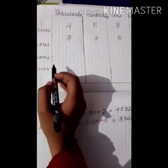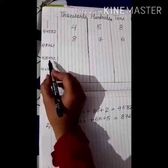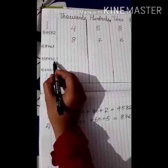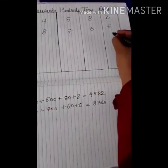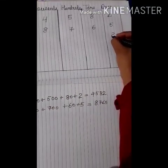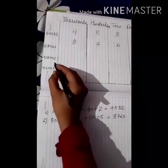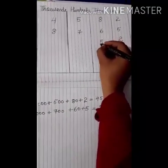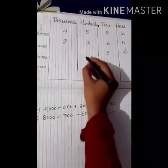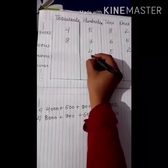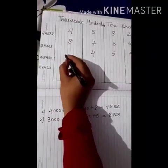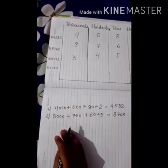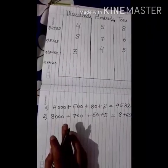Now let's see the third one: 3, 4, 5, 2. We will start from the last number. 2 is on the 1's place. 5 is on the 10's place. 4 is on the 100's place. And 3 is on the 1000's place.